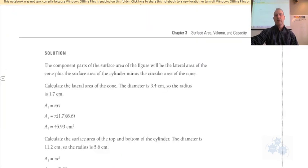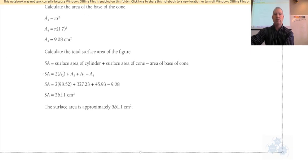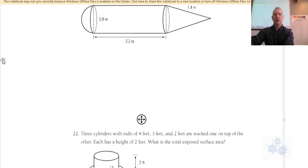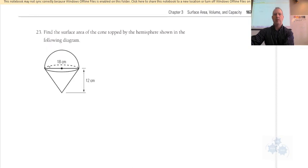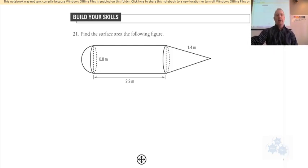A composite figure is just like what we've done before, except now we're using surface area formulas from what we've learned — cones, cylinders, and hemispheres. We didn't find the final answer, but it should turn out to be the number shown. There are two questions on this page and one more on the next page.